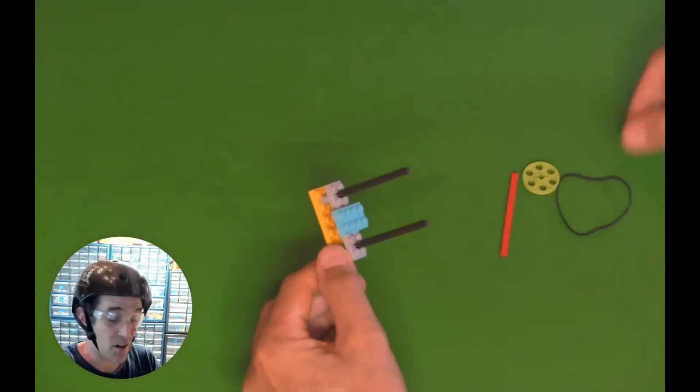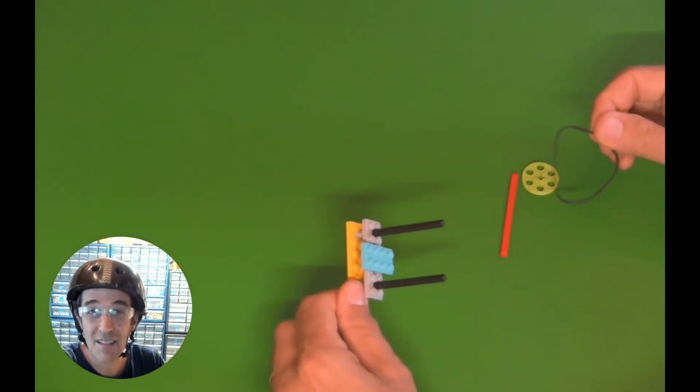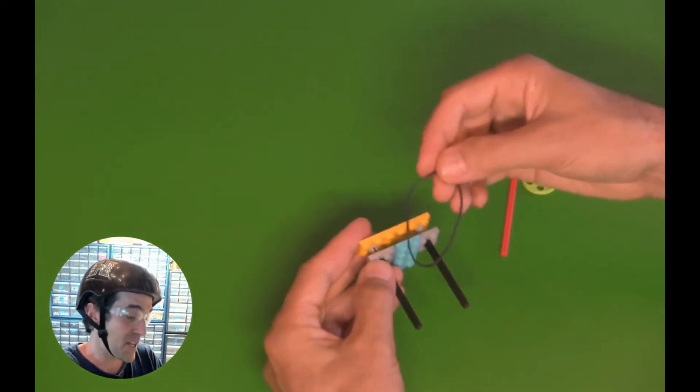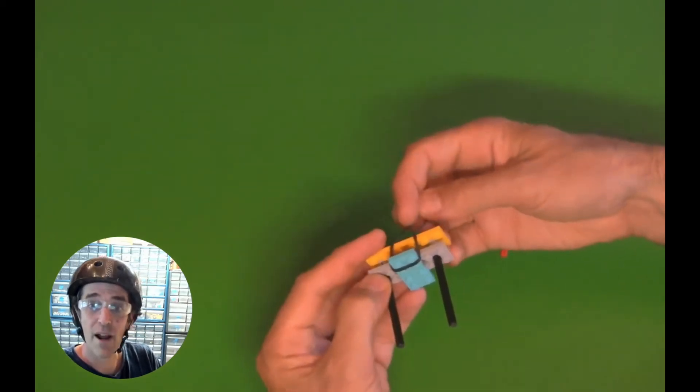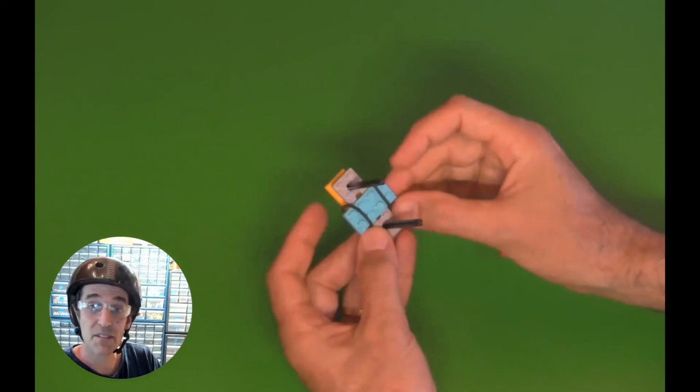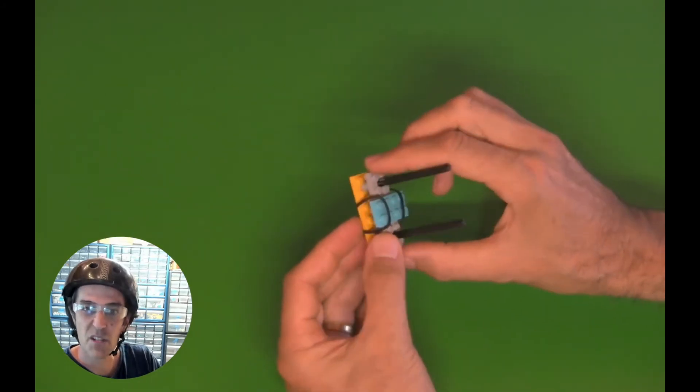Now we're going to need to add our rubber band which will give us our elastic energy to launch our arrow. So I'm going to take my rubber band and put it around this plate like this, wrap it around the back, and then wrap it around this side as well. My rubber band is a little loose but it should work fine.